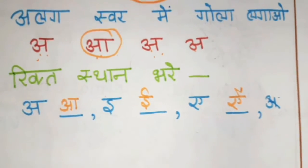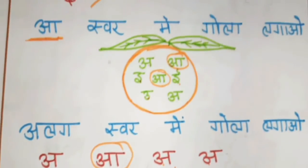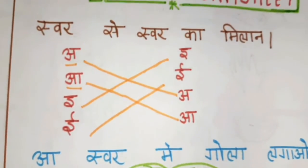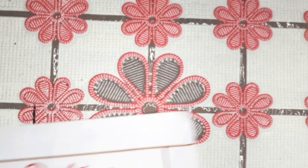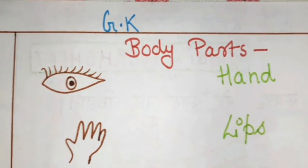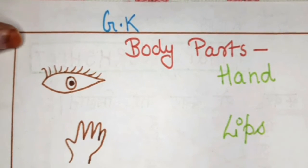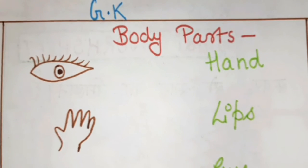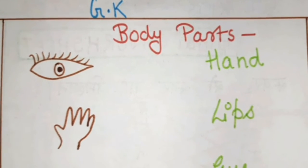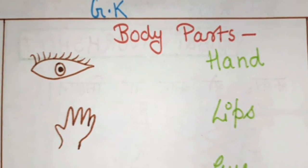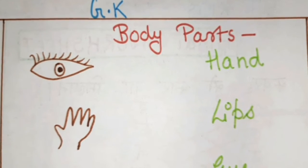So this is a Hindi worksheet — very basic and it was very interesting. Now let's start with GK. GK is added in nursery so that students can study it and they don't get overloaded. In GK there are very basic things — if you have a nursery child, you should talk about body parts.